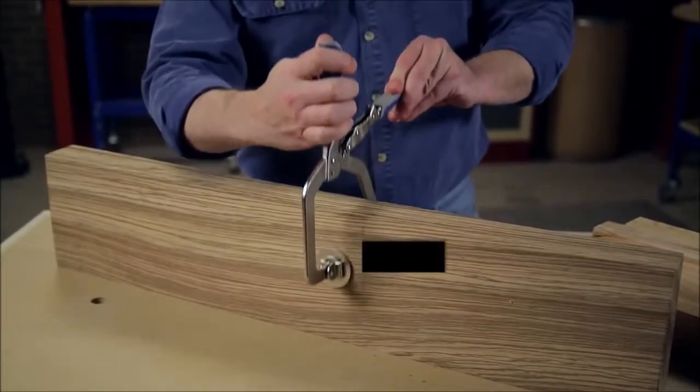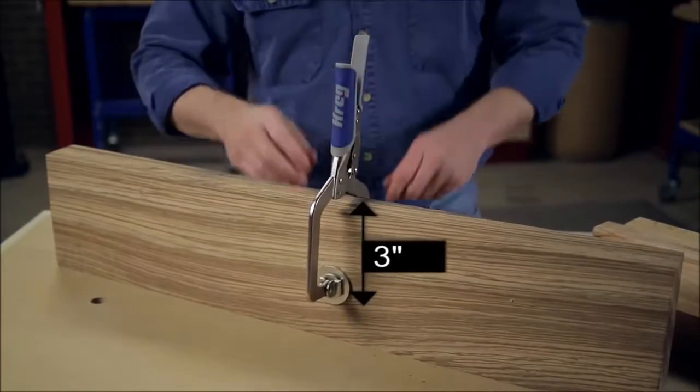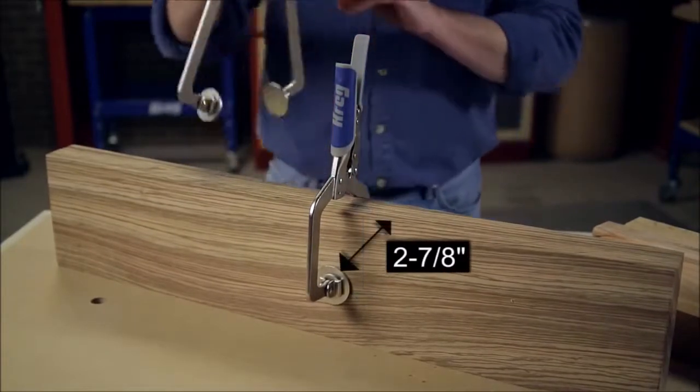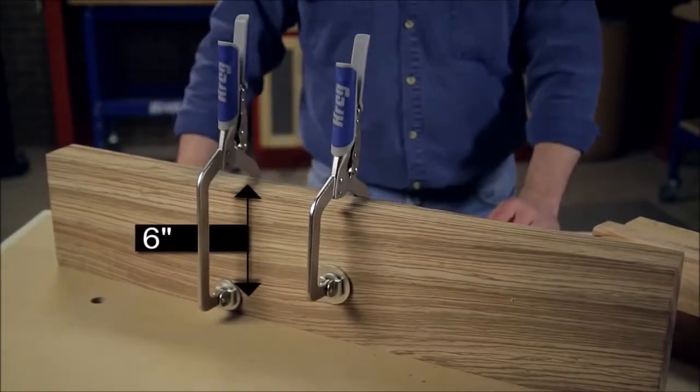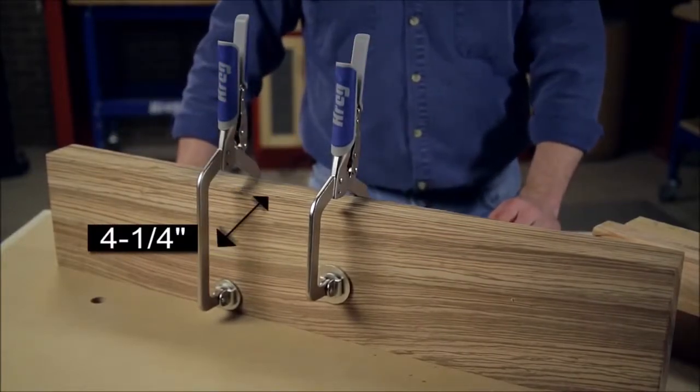The AutoMax 3 inch face clamp has a 3 inch reach and holds materials up to 2 and 7/8 inch thick. The AutoMax large face clamp has a 6 inch reach and works with materials up to 4 and a quarter inch.